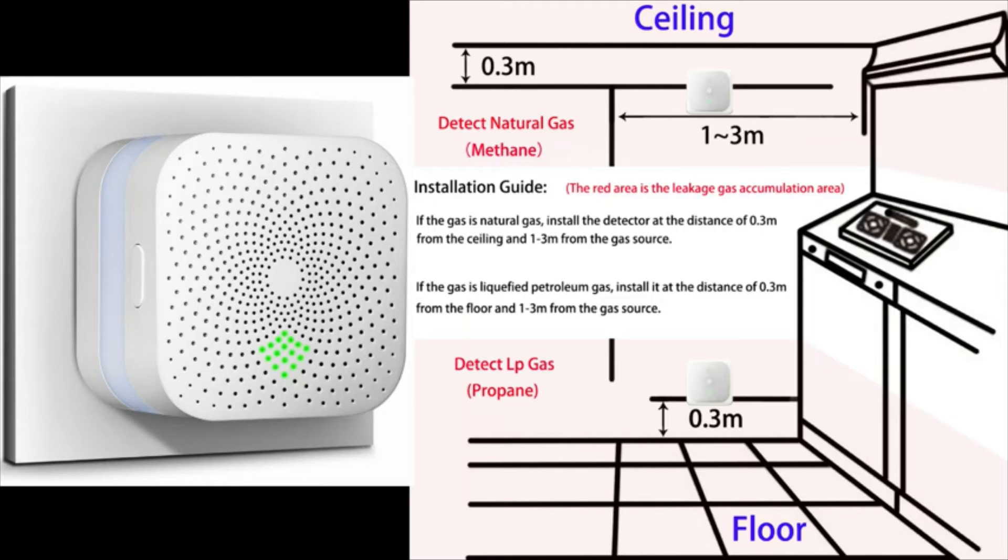And for LPG, please install the gas detector at the distance of one foot from the floor and three to nine feet from the source. This is very important and it shows very clearly in the menu.